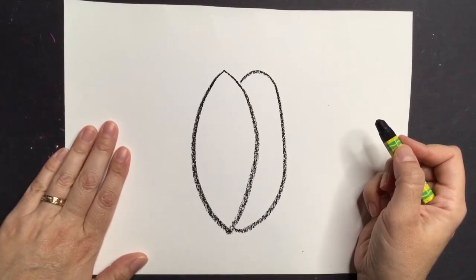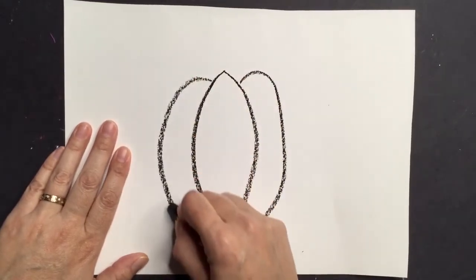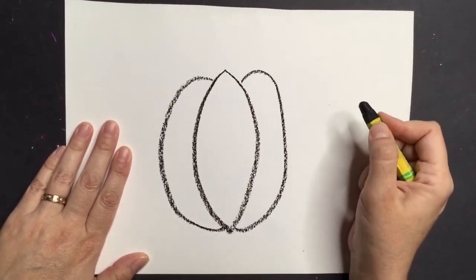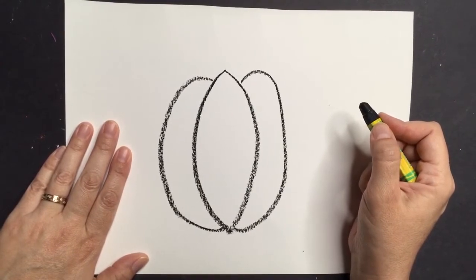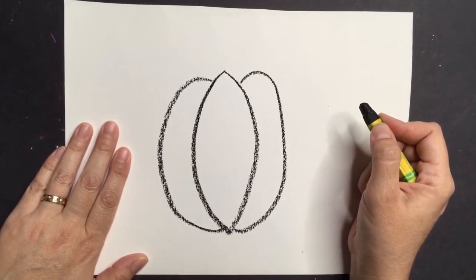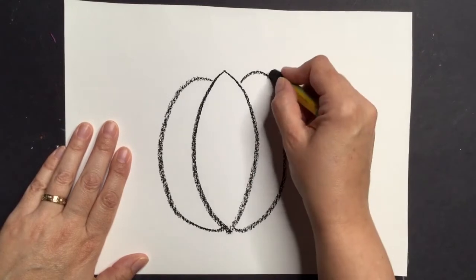Y haré lo mismo del otro lado. I'm going to do the same thing on the other side. I'm going to keep drawing curvy lines on each side until I feel like my pumpkin is finished. Seguiré dibujando líneas curvas a cada lado hasta que sienta que mi calabaza está terminada.